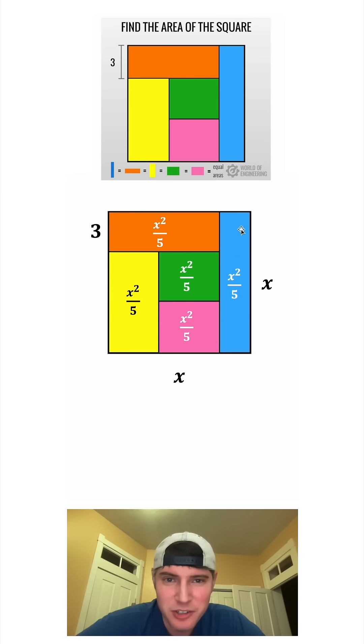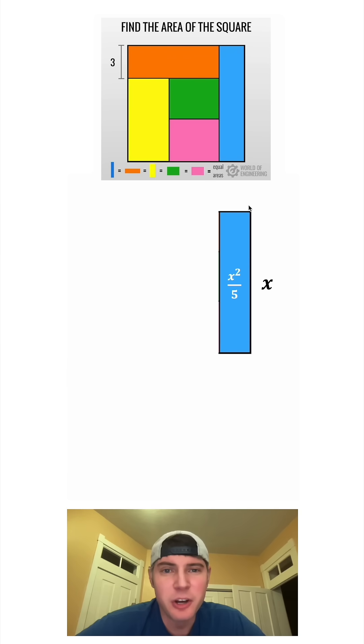For the next step, out of all of these rectangles, the blue one is the only one that has x entirely as one of its sides. So let's focus on that one. We already know that the height is x. Let's call the base b. We know that the base of b times the height of x is going to be equal to the area x squared over 5.